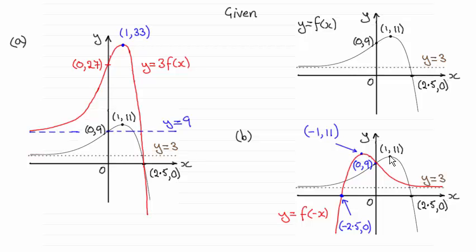But this maximum point at 1, 11, as you can see, gets reflected across the y axis. And it's now got coordinates minus 1, 11. So you should be able to see then the curve of y equals f of minus x.